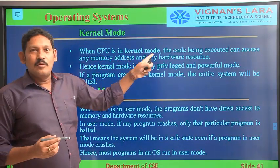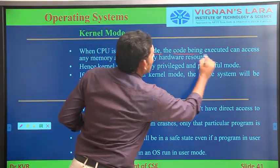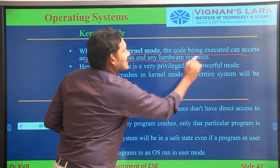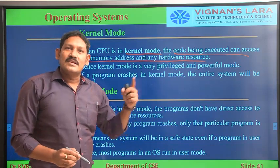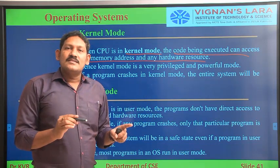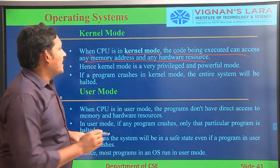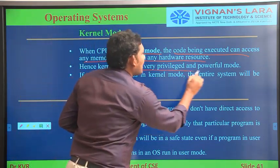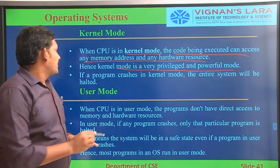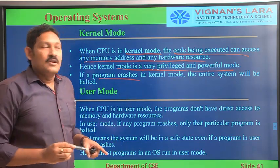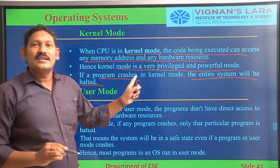When the CPU is in kernel mode, the code being executed can access any memory address and it can access any hardware resources. It can access any memory location as well as any resources. That is the reason why the kernel mode is very powerful. And if a program crashes in kernel mode, the entire system will be halted.